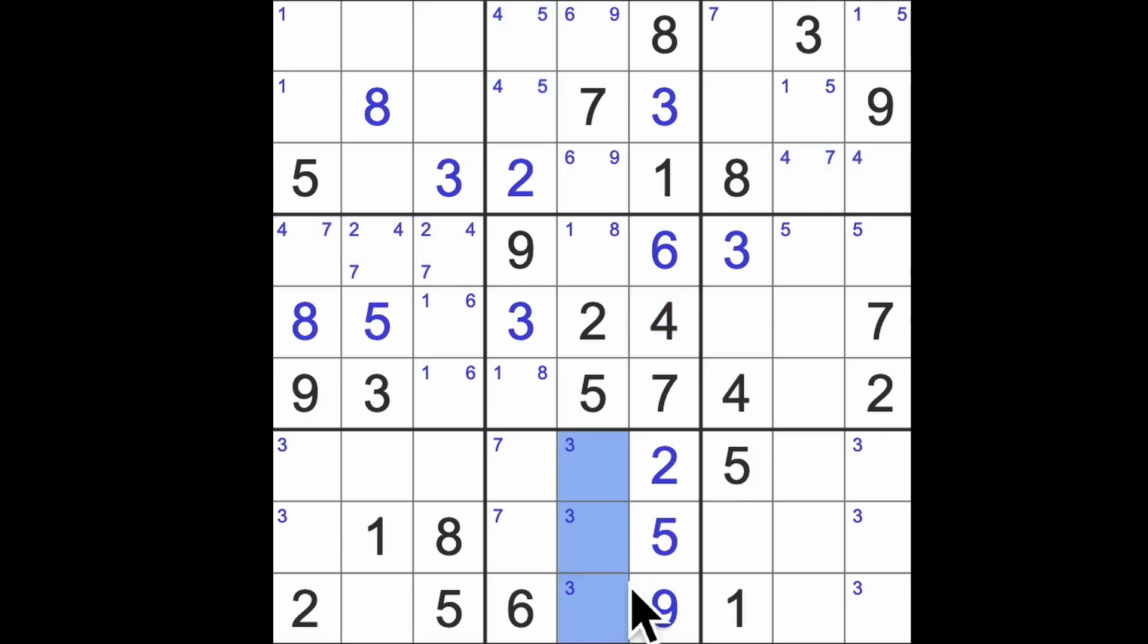Fours are somewhere there. Ones are somewhere there. Fours are somewhere there. Now two blocking across here, we have a pair of one-five here, so this will mean two is here. So two blocking down here, two blocking down here, two across here, and across here means we can place our two there.